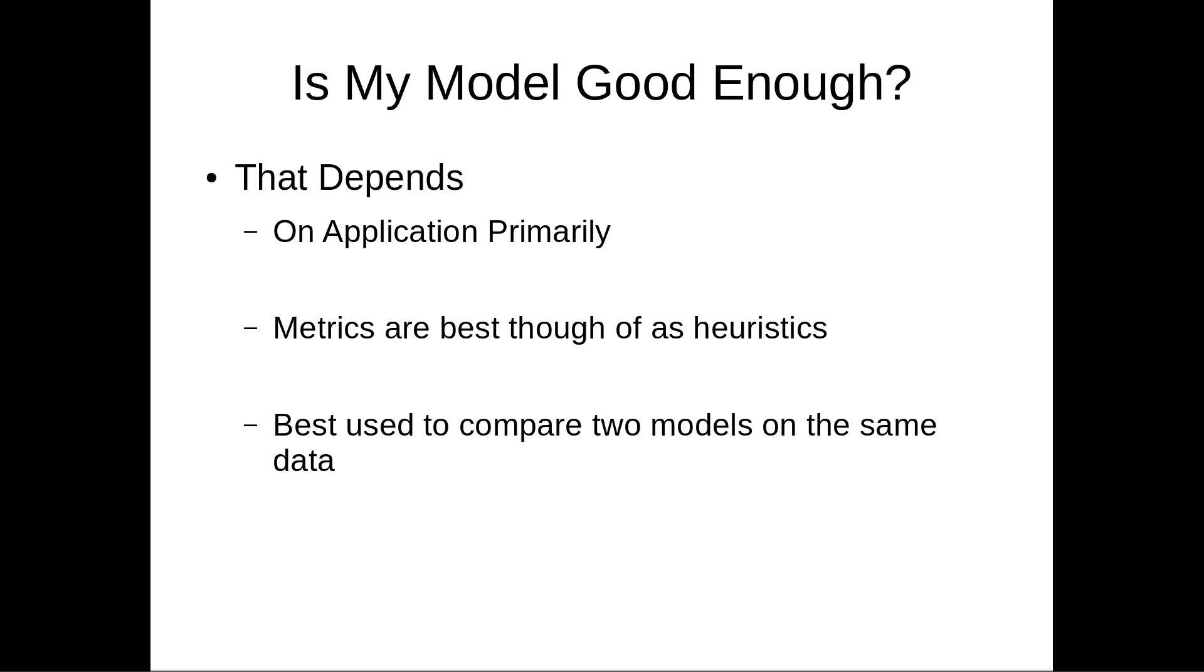Okay, so we've talked about coefficient of determination and RMSE as two different metrics that we can use to measure our models. But how do we know what good is? Is my model good enough? Well, that depends. It always depends. What does it depend on? Primarily on application. Are we guessing some number like a house price and we need to be within $10,000? Maybe our model doesn't have to have such a good R squared. Are we guiding a missile to its ultimate location? Probably we want the R squared to be fairly good. So it depends on the application.